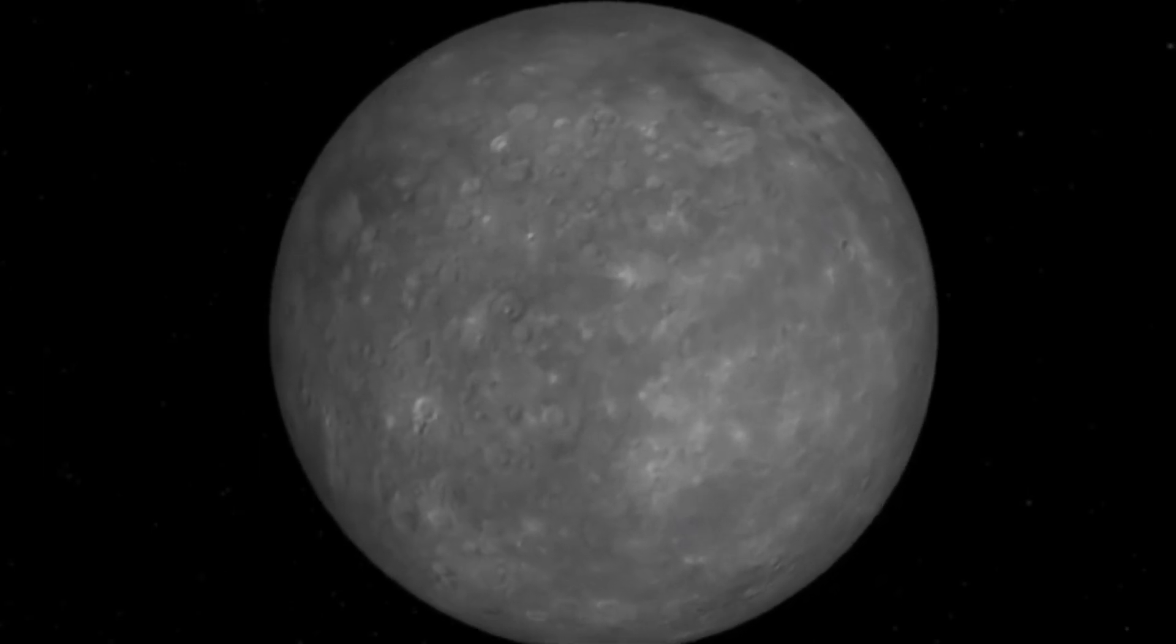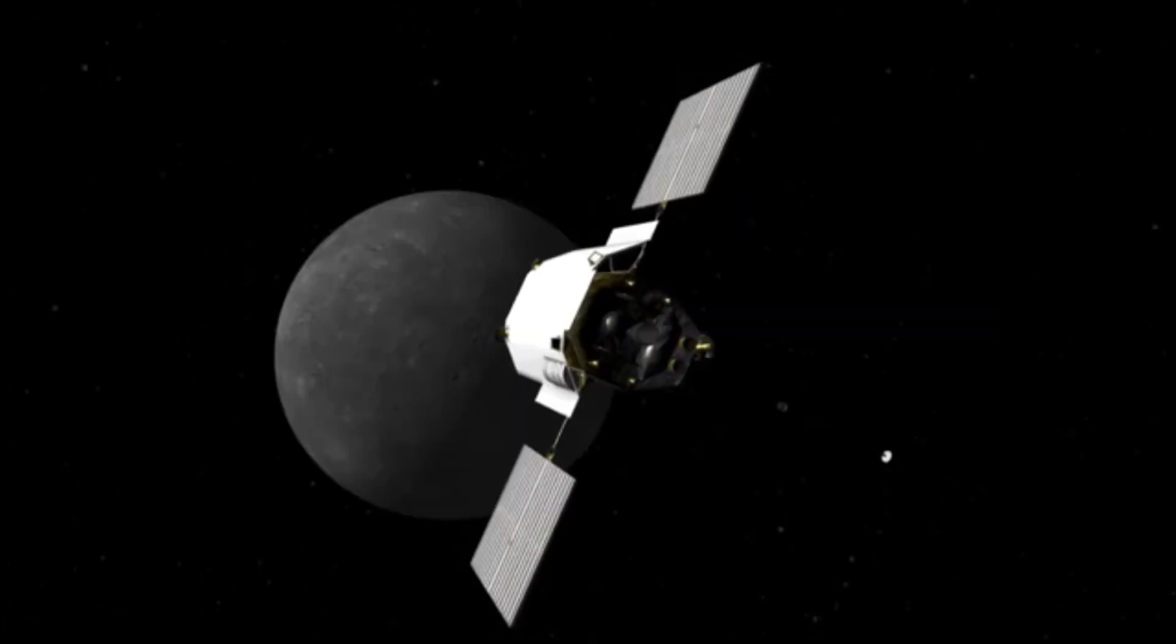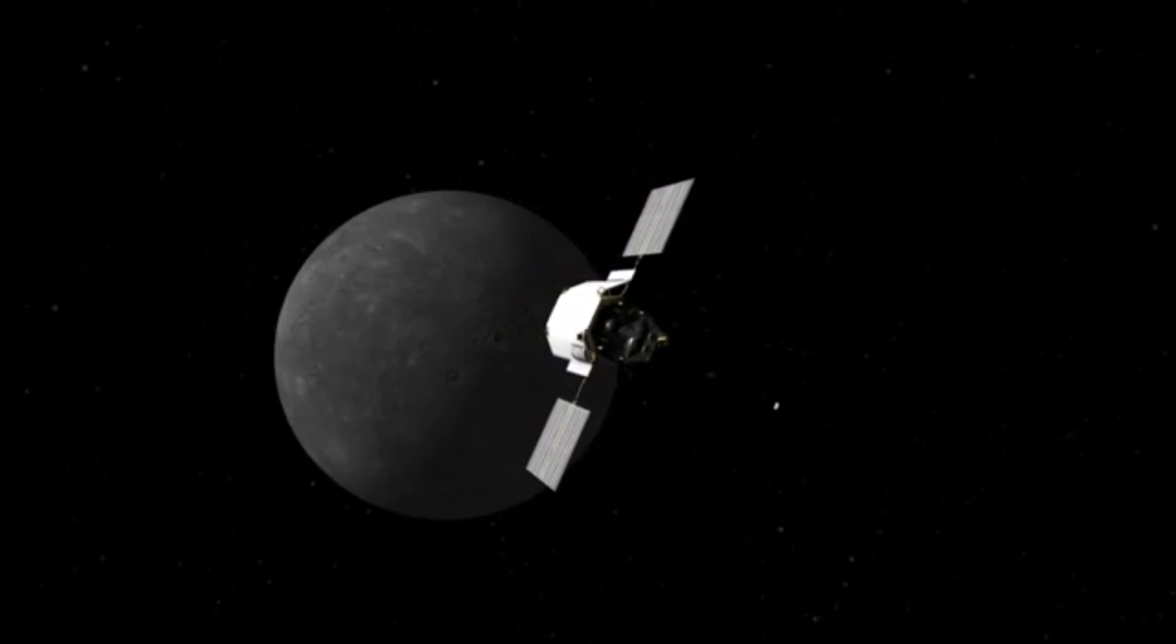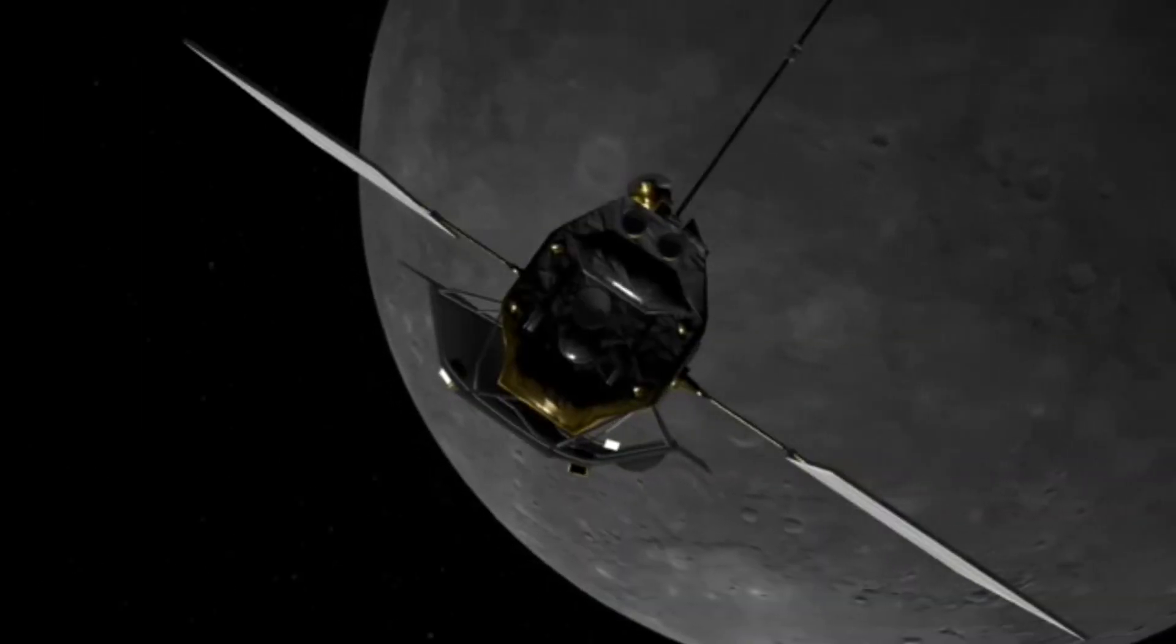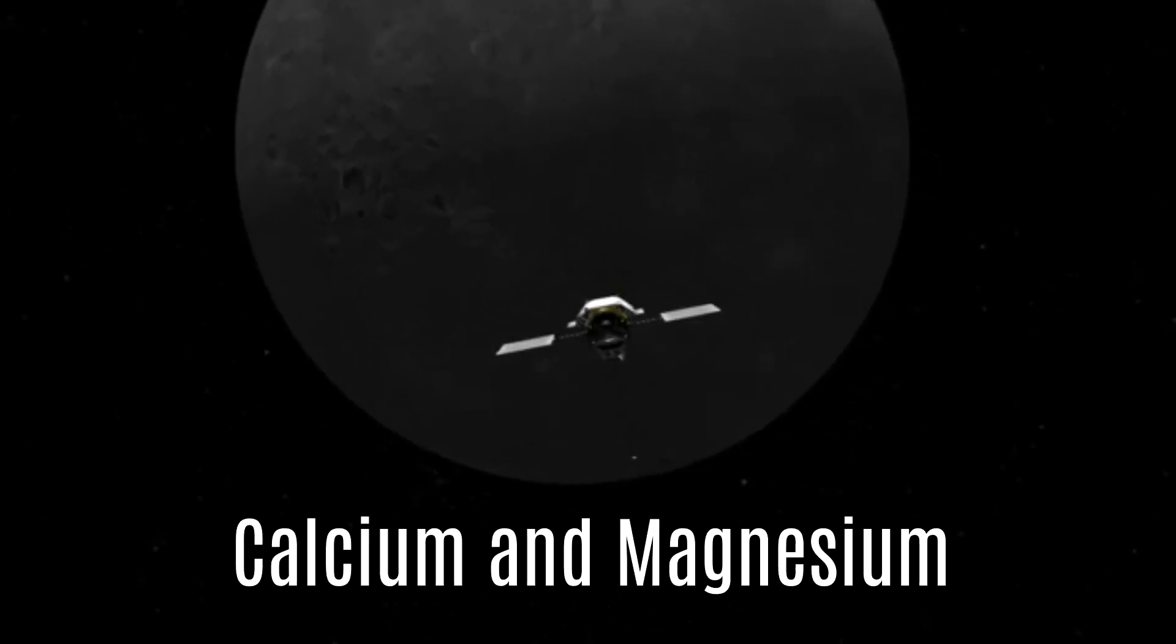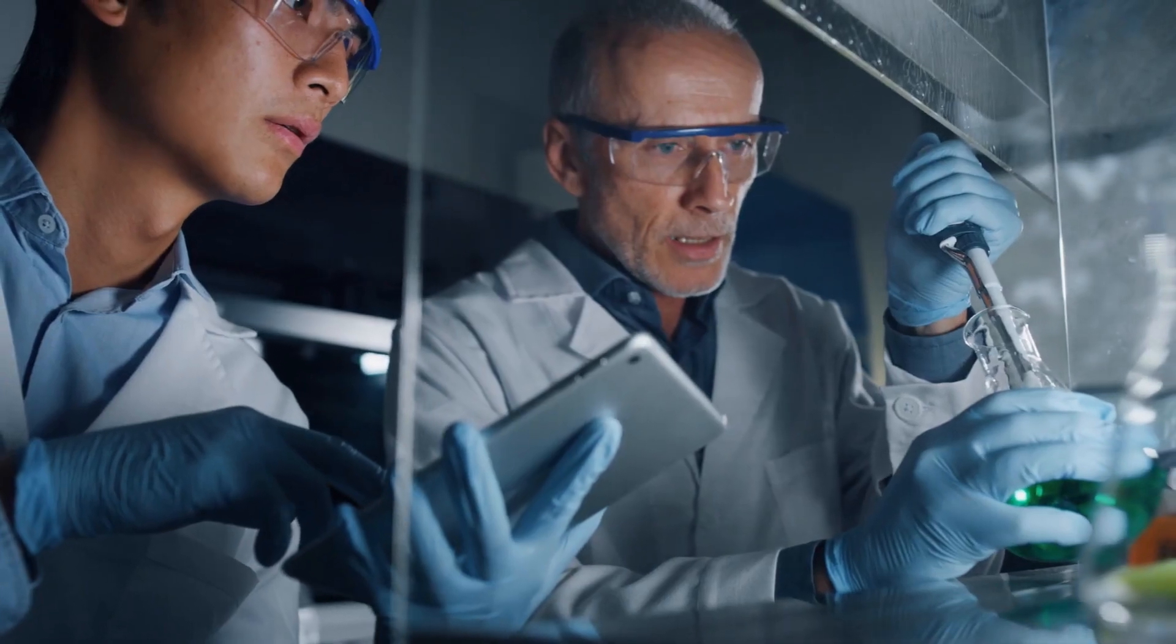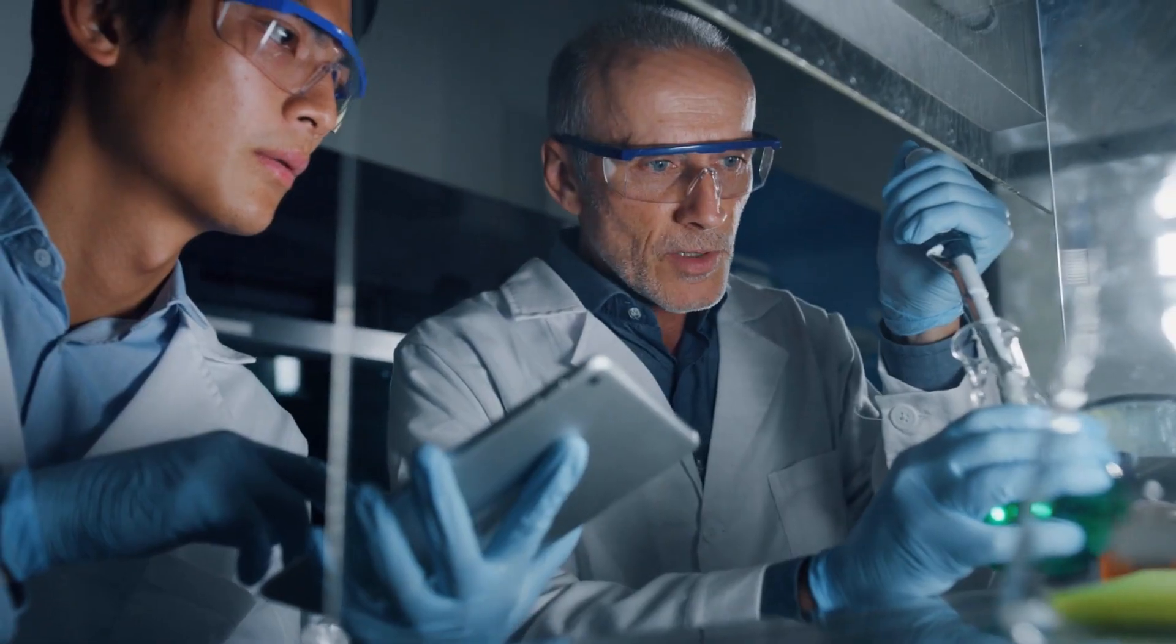Over the course of its mission, Messenger took a remarkable 200,000 images, unveiling parts of Mercury never seen before. One of Messenger's most intriguing discoveries was the unusually high amounts of calcium and magnesium on Mercury's darker side.